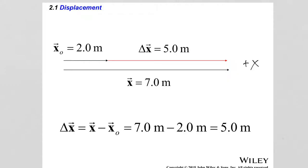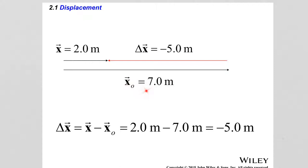When the roles are reversed — initial position at seven meters and final position at two meters — the displacement is two meters minus seven meters, which equals negative five meters. The displacement now points in the negative X direction, and that orientation comes through with the minus sign in the result.